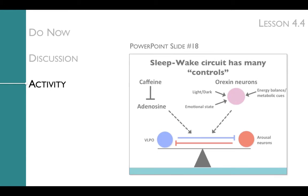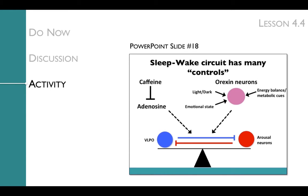The next slide presents the sleep-wake circuit's many controls, which at this point of the unit include adenosine and orexin neurons. Now that we understand how caffeine affects the sleep-wake circuit, we can go back to address the question of the day, which is what we do in the wrap-up.